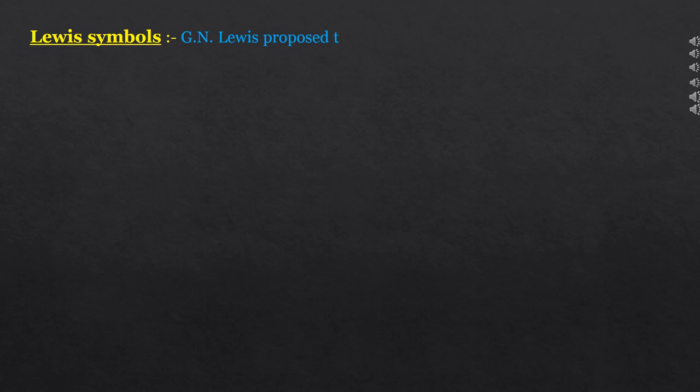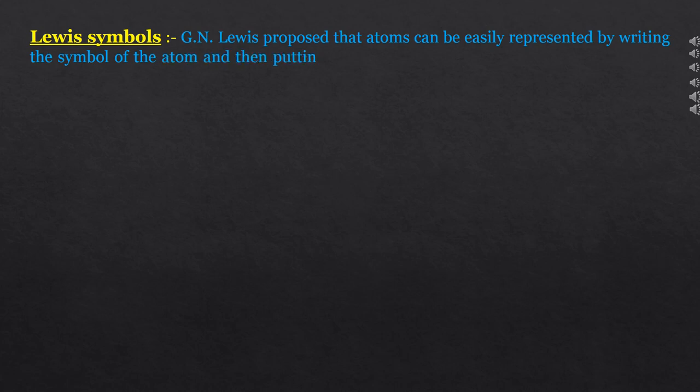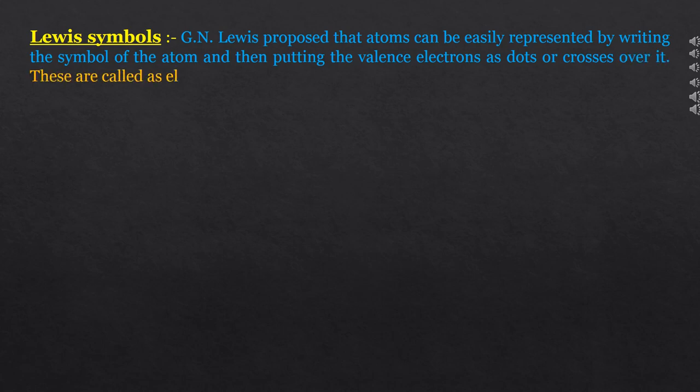Our next topic is Lewis symbols. G.N. Lewis proposed that atoms can be easily represented by writing the symbol of the atom and then putting the valence electrons as dots or crosses over it — these are called electron dot structures. According to Lewis, all the electrons in an atom are not involved in combination; it is only the outermost electrons which take part in chemical combination.